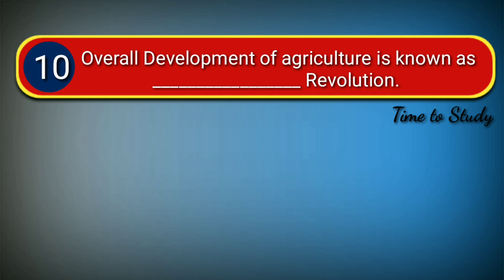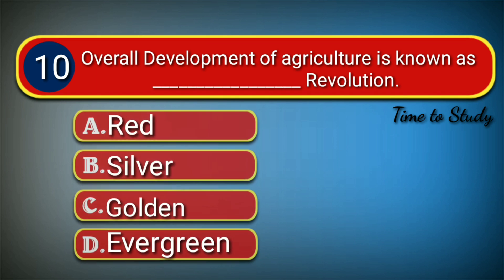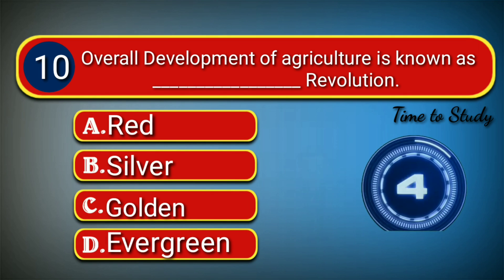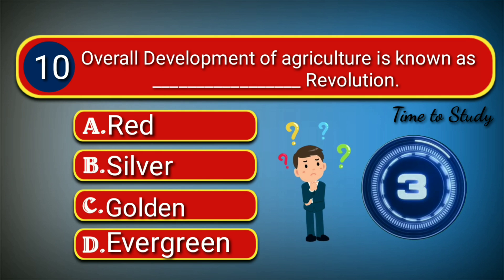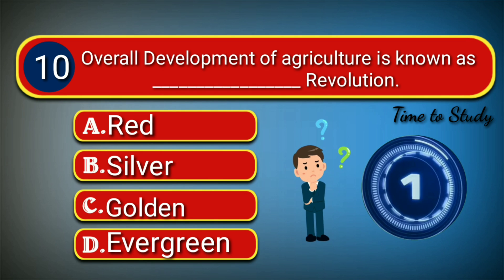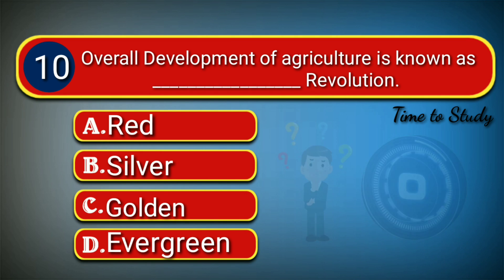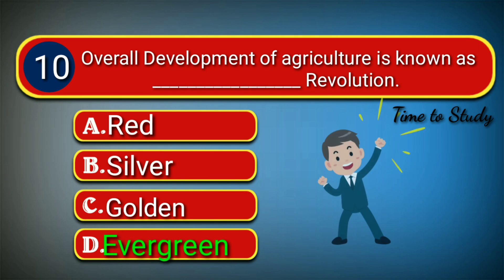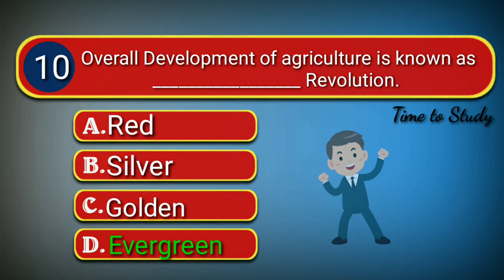Tenth question: Overall development of agriculture is known as evergreen revolution. India — Durgesh Patel.